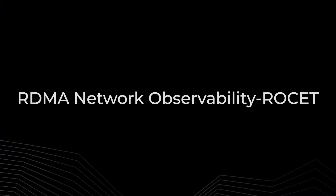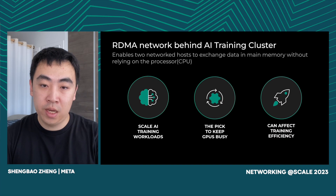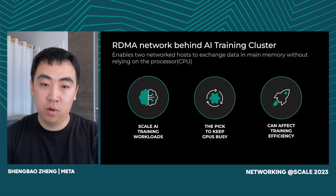Now let's start with RDMA network observability. RDMA enables networked hosts to exchange data in main memory without relying on the processor. At Meta, we built an independent RDMA network for training clusters to scale AI training workloads. One design goal of AI clusters is keeping the GPUs busy, and RDMA network is our pick that makes that possible. Since RDMA is very sensitive to network trouble, it can be a key factor affecting training efficiency.